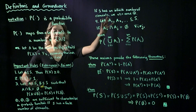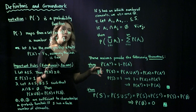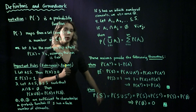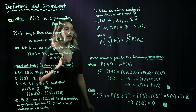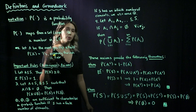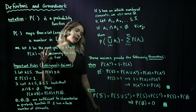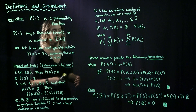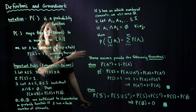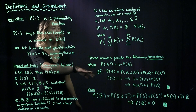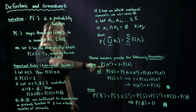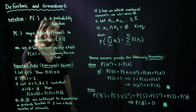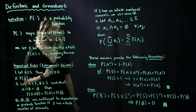These four axioms are all we're going to need to build the rest of our probability theory. We're going to end up with a lot of theorems based on this. The first theorem we're going to talk about is the probability of A complement equals one minus the probability of A.